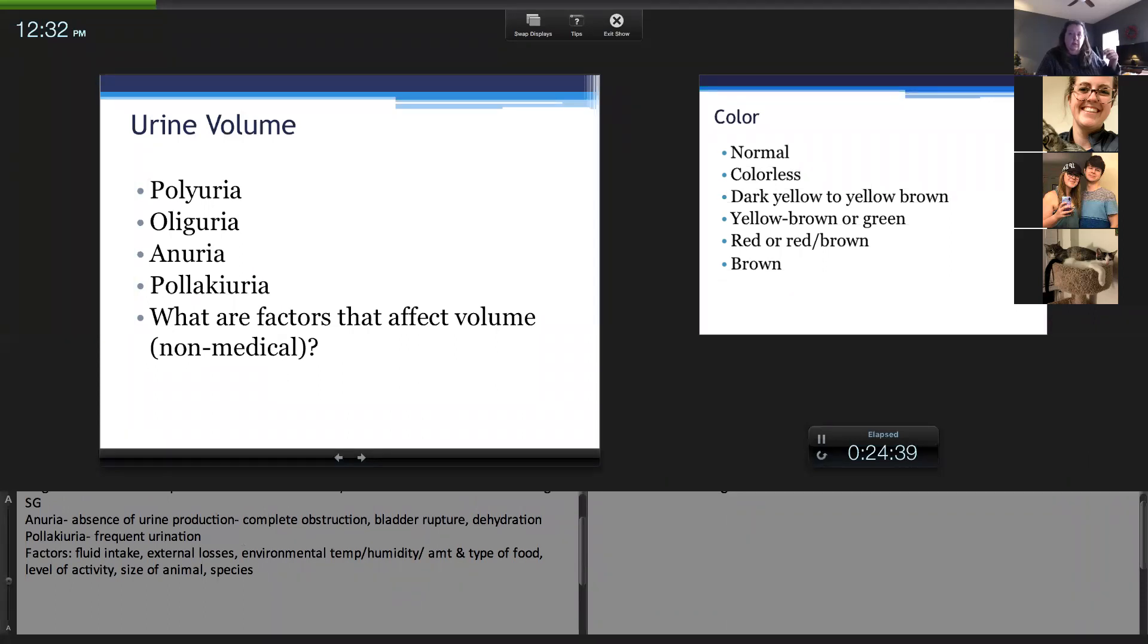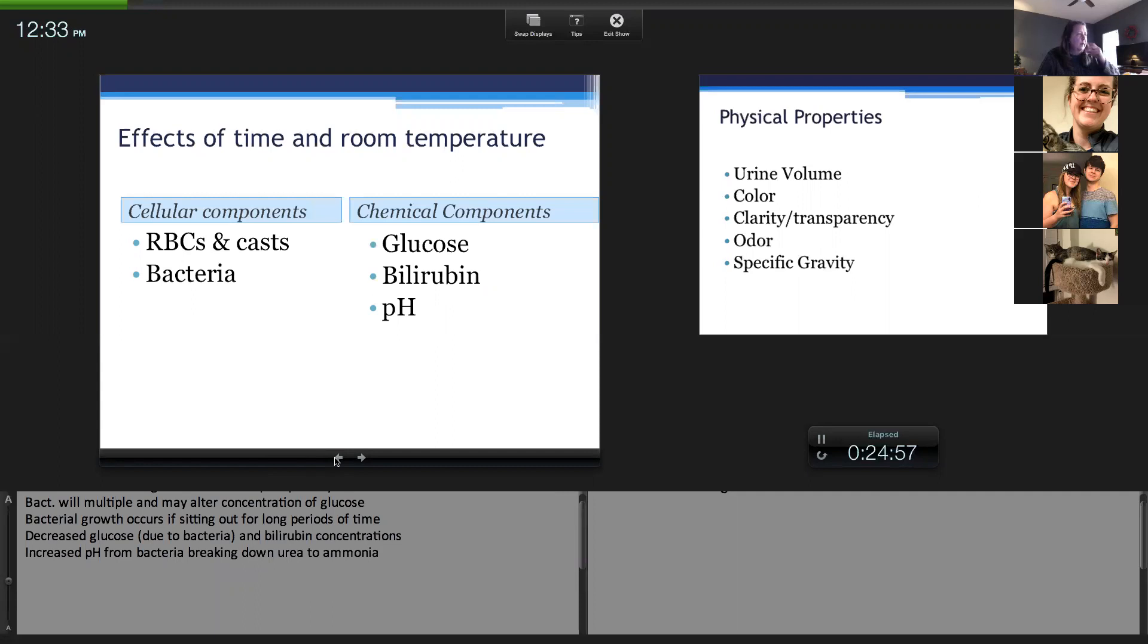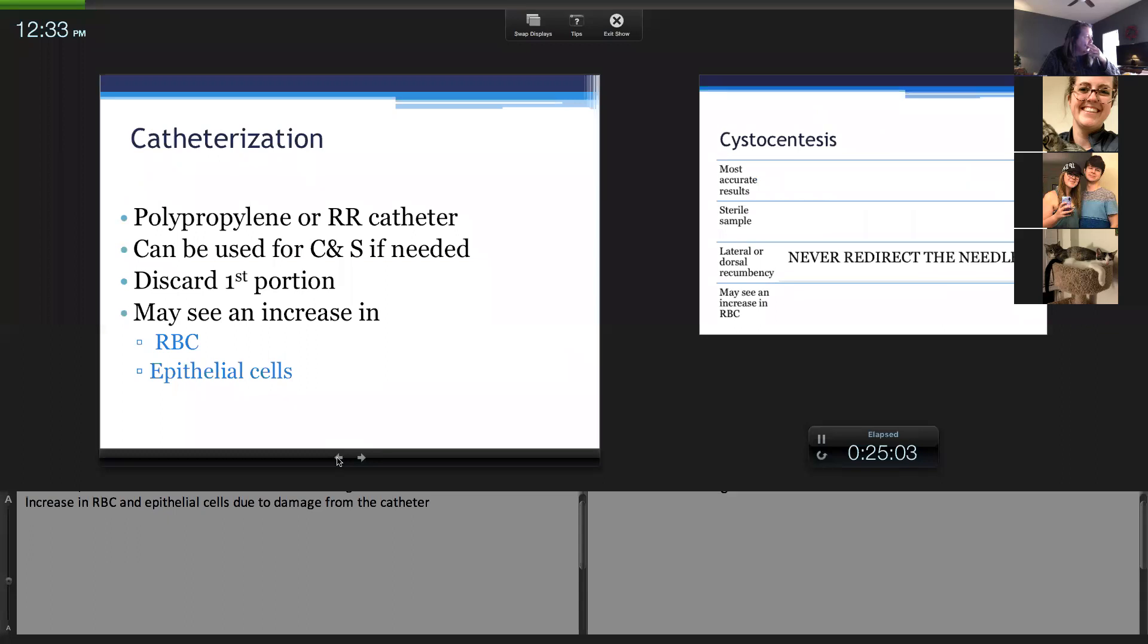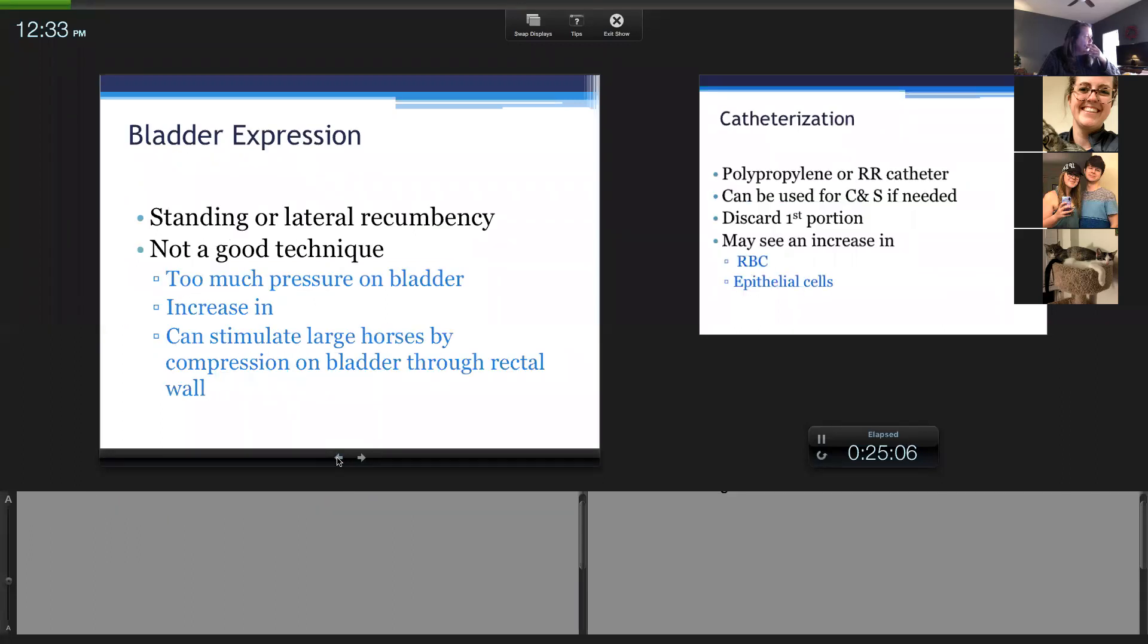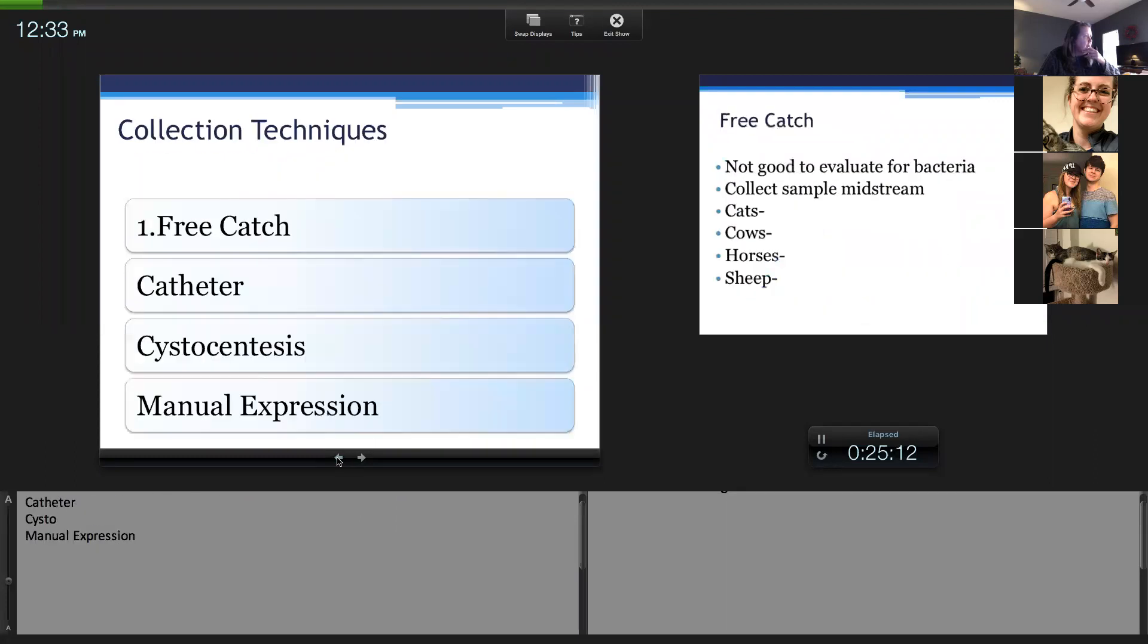Think about things that affect urine production, urine volume. Obviously dehydration, if they're not drinking. If they're drinking a lot, hopefully the owner says they are polyuretic because those should go together. Are there any questions on urine?